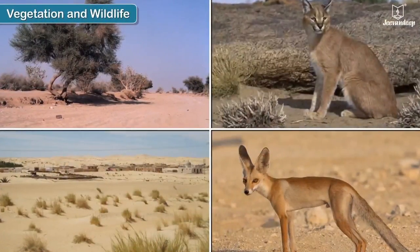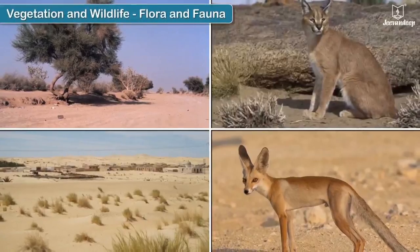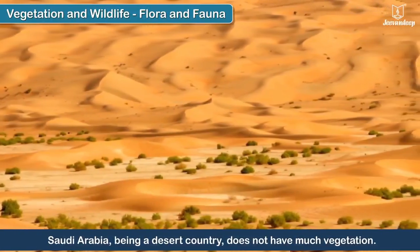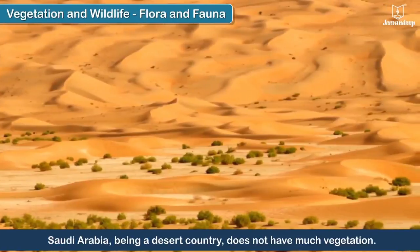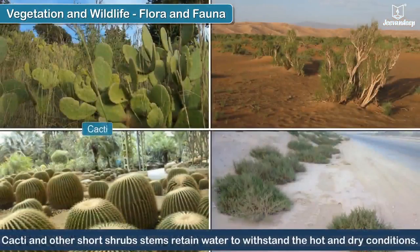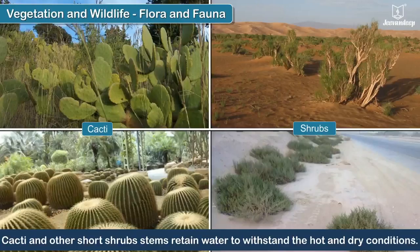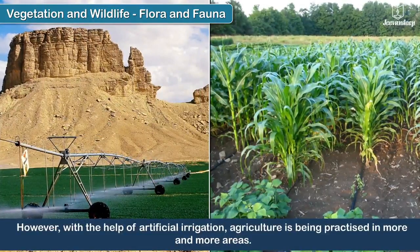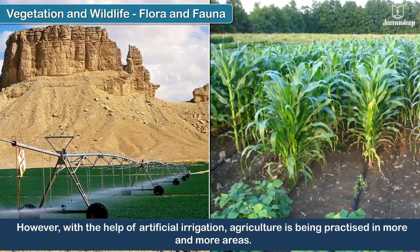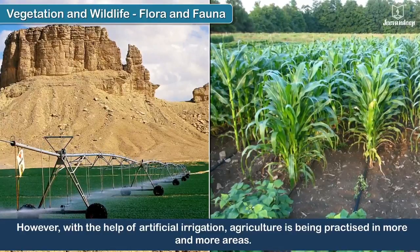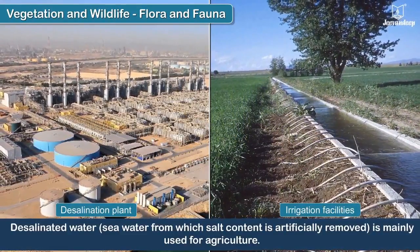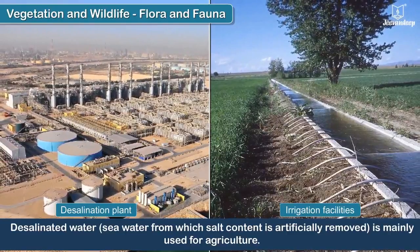Vegetation and wildlife. Flora and fauna. Saudi Arabia, being a desert country, does not have much vegetation. Cacti and other short shrub stems retain water to withstand the hot and dry conditions. However, with the help of artificial irrigation, agriculture is being practiced in more and more areas. Desalinated water — sea water from which salt content is artificially removed — is mainly used for agriculture.